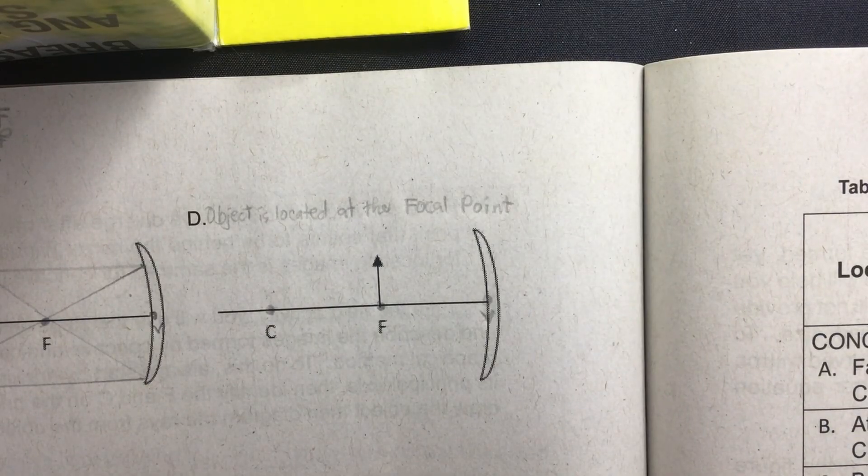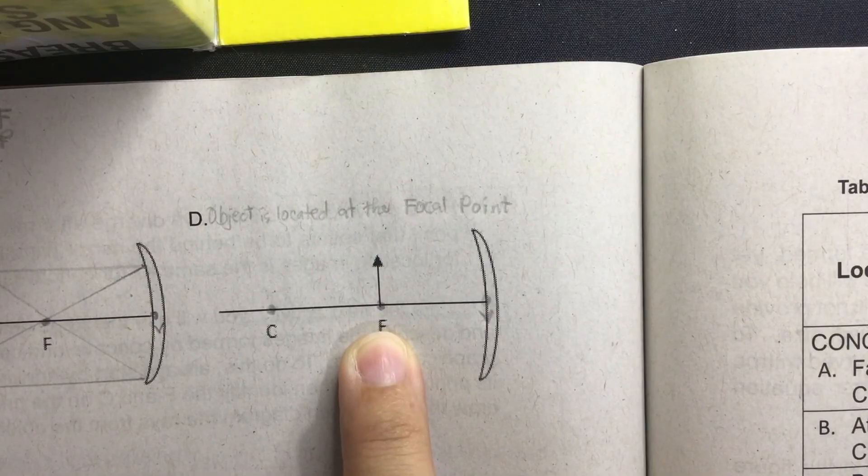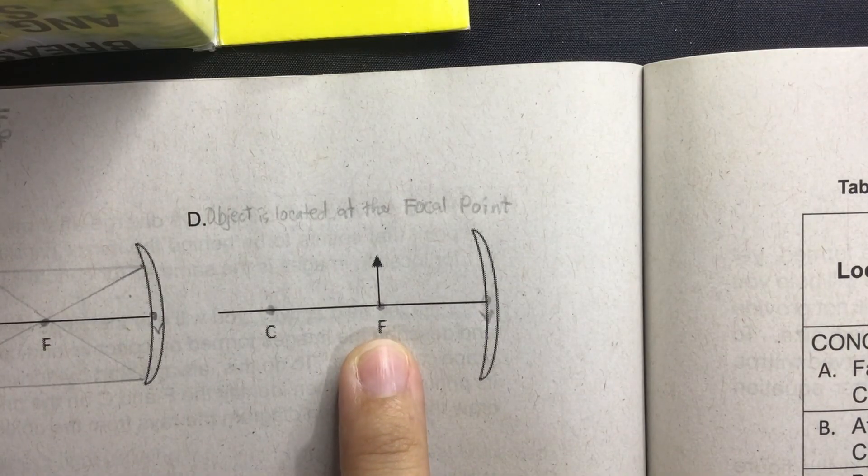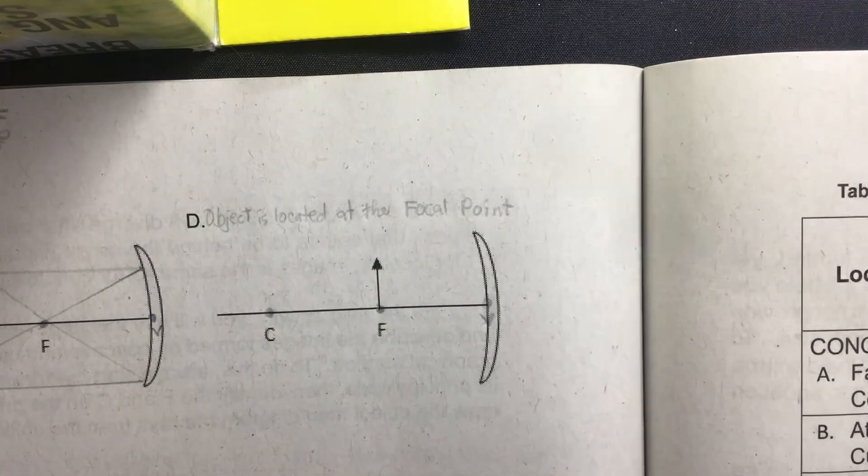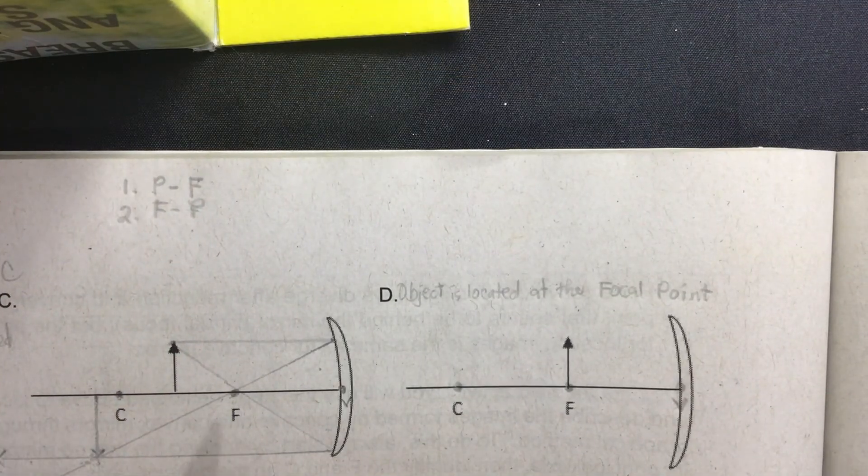This time we have the fourth diagram wherein the object is located at the focal point. So where do you think our image will be formed? Let's find out. We're going to perform the PF ray. What is P? P is a ray of light parallel to the principal axis.